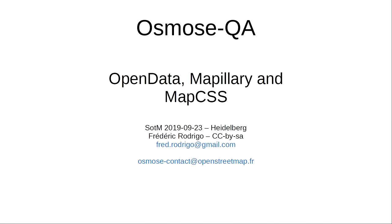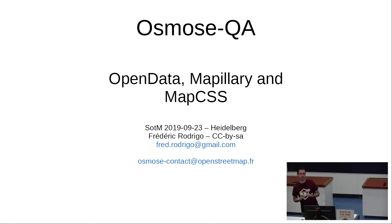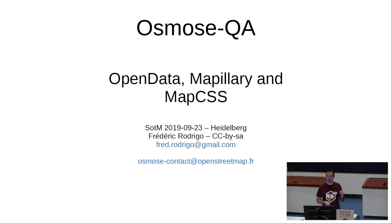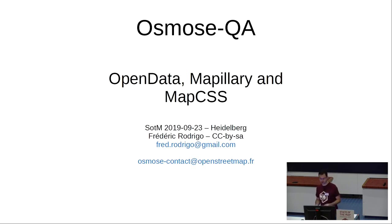Thank you. Good morning. Osmose QA is quality assurance. It's a tool for checking and reporting issues in the data of OpenStreetMap. This talk is more focused on specific points of this tool — it's not a general talk about it.